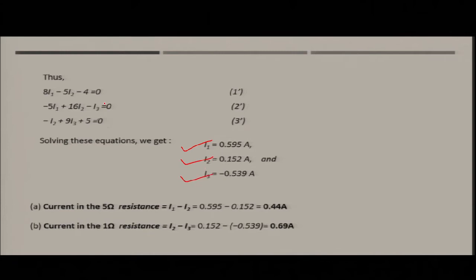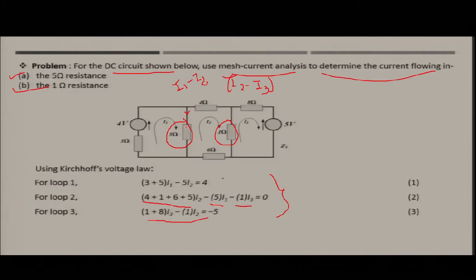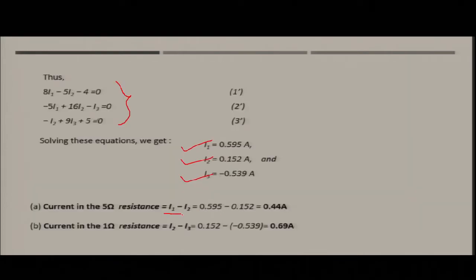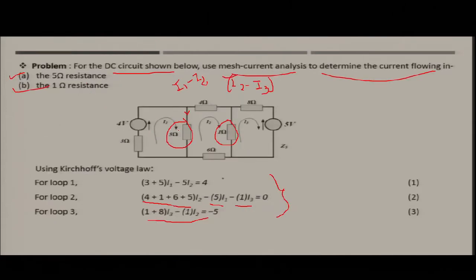With three equations and three variables, you can solve using Cramer's rule to find the values of i1, i2, and i3. The current through the 5-ohm resistor is i1 minus i2, giving 0.44 amperes, and the current through the 1-ohm resistor is i2 minus i3, giving 0.69 amperes.